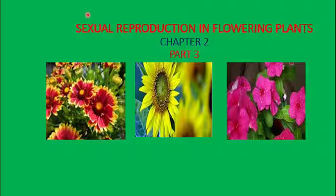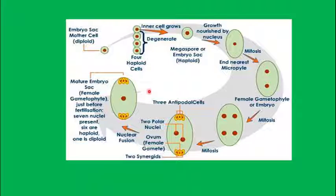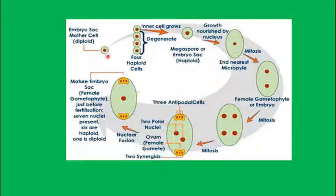Let's study the post-pollination stages. Before going to that, I want you to summarize what we learned in the previous class about the formation of the female gametophyte, which will be helpful for understanding the post-pollination stages. We studied that the Megaspore Mother Cell (MMC) is diploid in nature — be very careful, it is diploid.